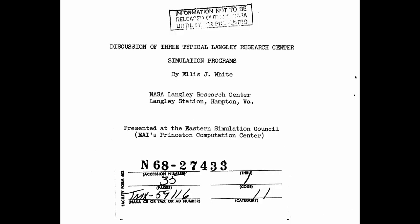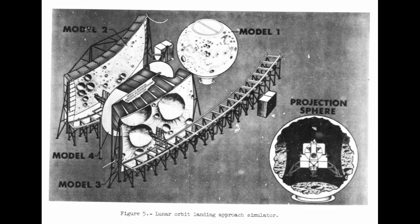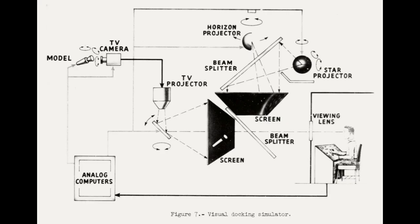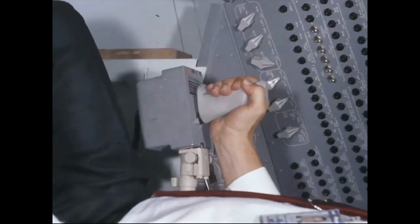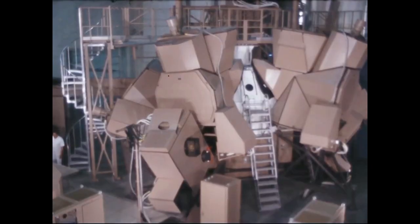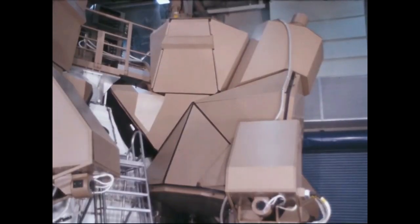The principles of LOLA, the Lunar Orbit and Landing Approach Simulator, were outlined in this document. It describes a method of combining images of spacecraft, stars and the lunar surface using beam splitters. The concept was brought to life in a number of Apollo Command and Lunar Module simulators, where projection boxes were bolted over the cabin windows of actual spacecraft.